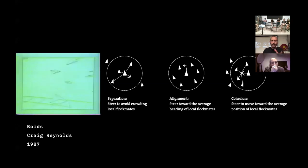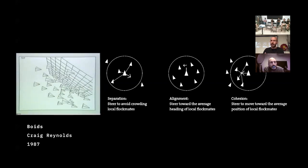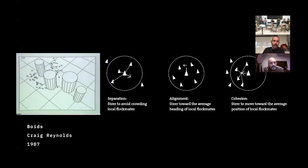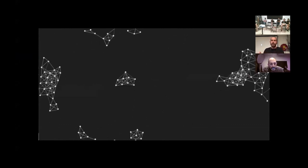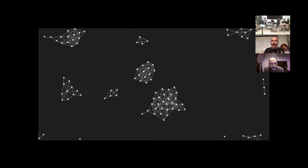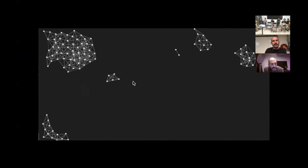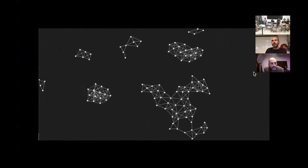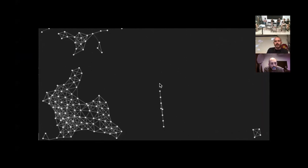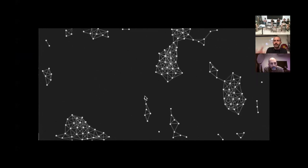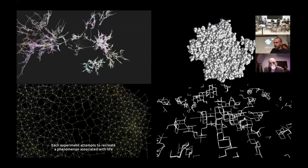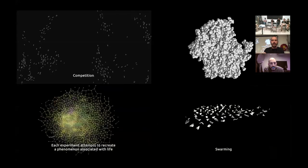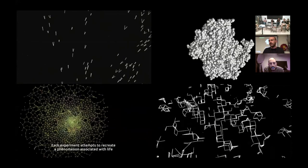As a computational artist — someone who deals with code for creative purposes — what I generally tend to do is implement this kind of behavior. But my personal tendency is to get away from simulating things and think about it as abstract structures. This is that exact same behavior, but I'm no longer thinking of birds or fish — it's just dots and lines, but they can form very interesting structures. Once you have that in code, you can start playing around with it, manipulating the aesthetic aspects and thinking about it in very different ways.